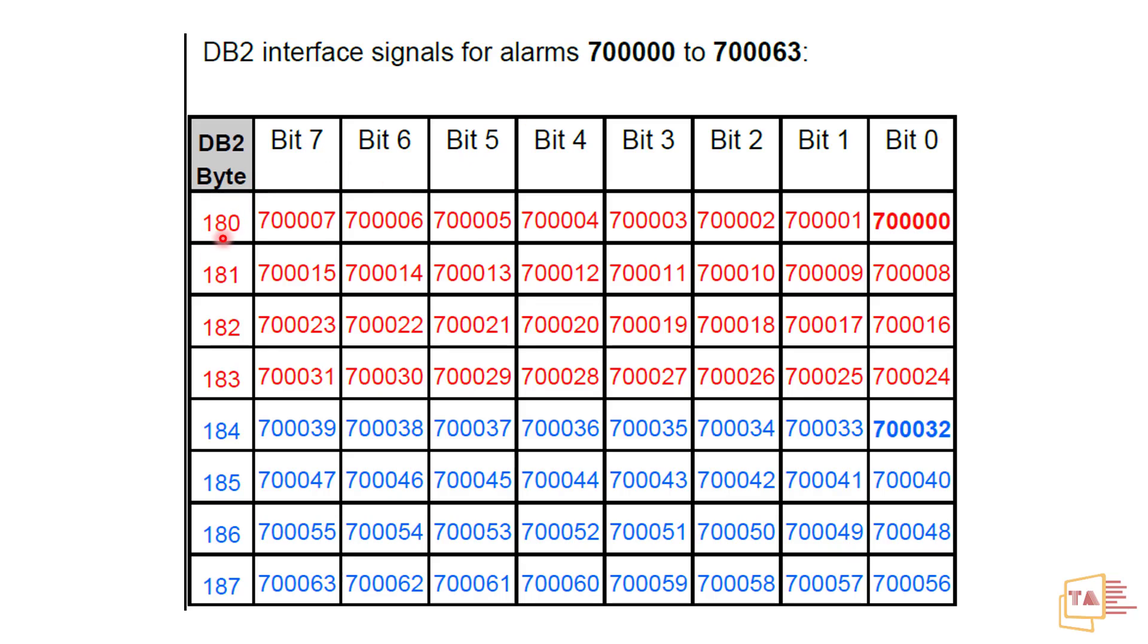180, from 180 we have the bit 0 to 7, 181 we have 0 to 7. So in PLC, in our PLC programming we are using DB2, that means data block 2. So we are using DB2 to make the PLC user alarms. Using this only we can be able to troubleshoot the alarms using DB2.